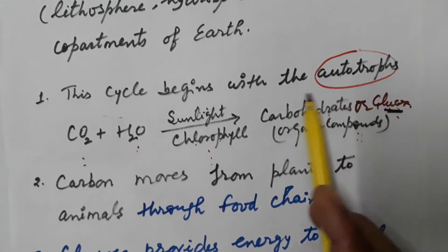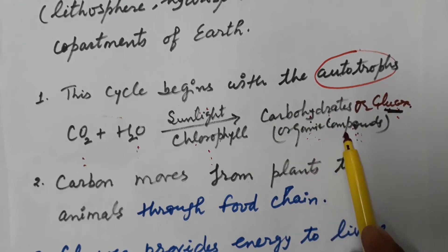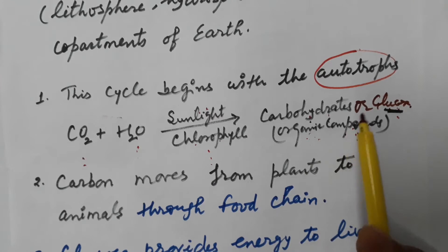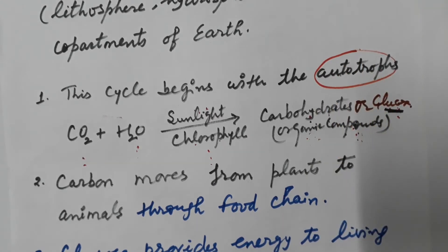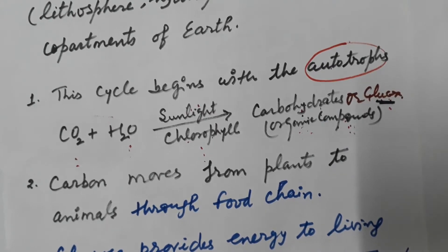Glucose is a carbohydrate — these are organic compounds. Organic compounds are those compounds in which carbon and hydrogen are present. The food synthesized by autotrophs is transferred to organisms which are not able to synthesize their own food material, so a food chain starts. This carbon-based food material goes from autotrophs to heterotrophs like herbivores and carnivores.